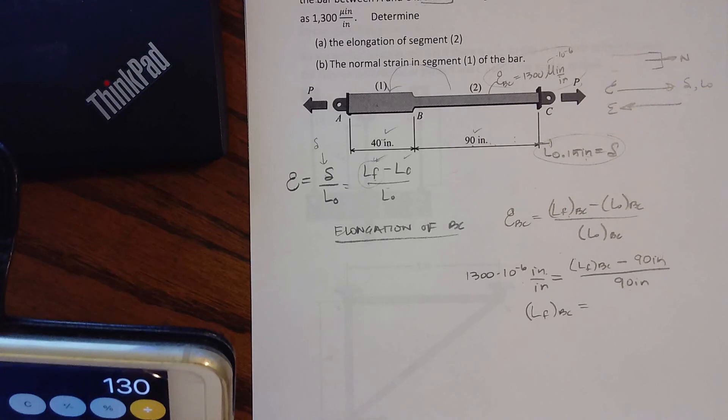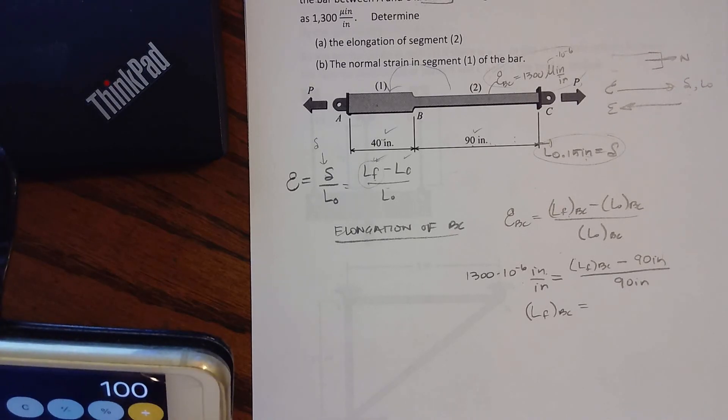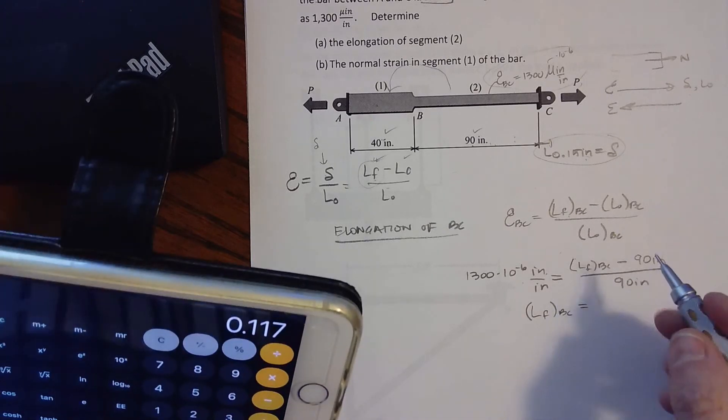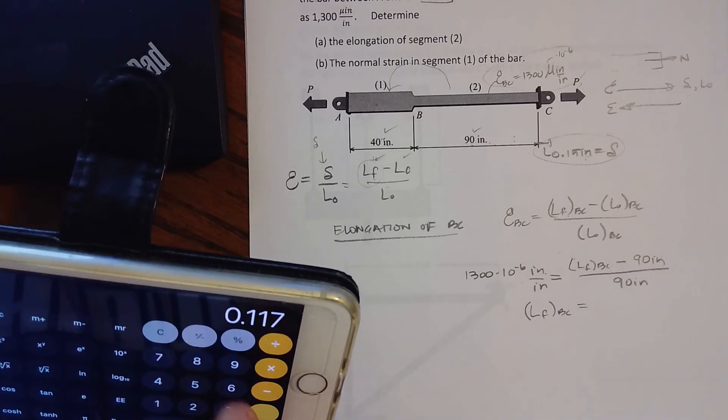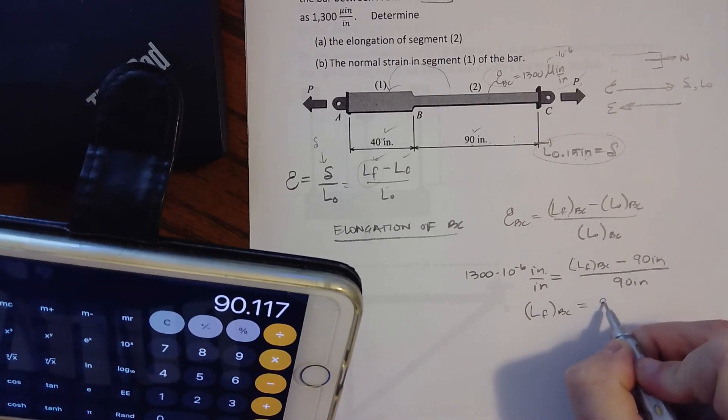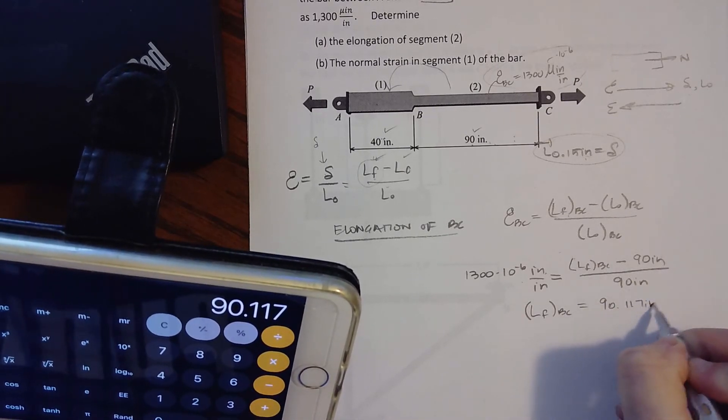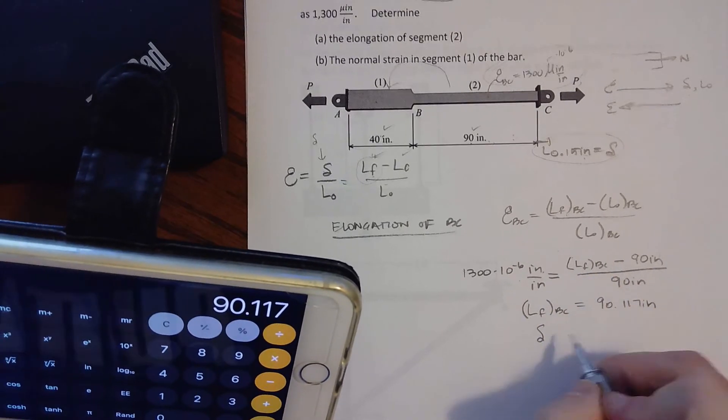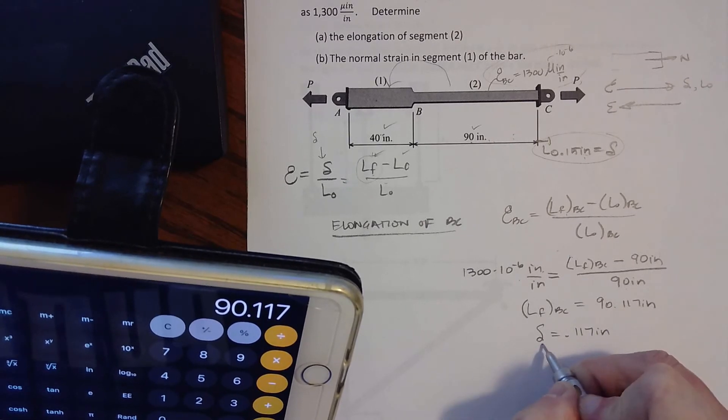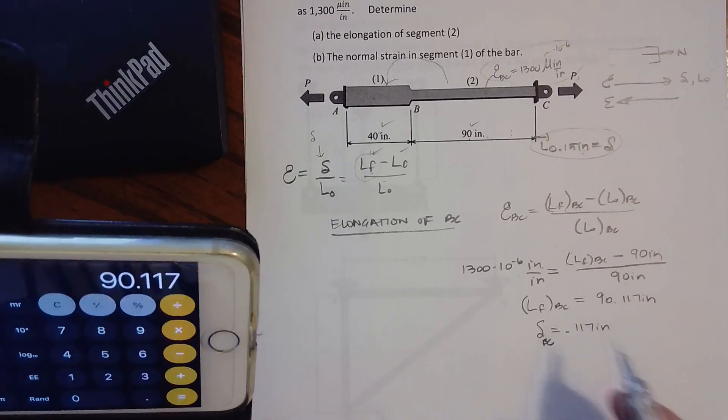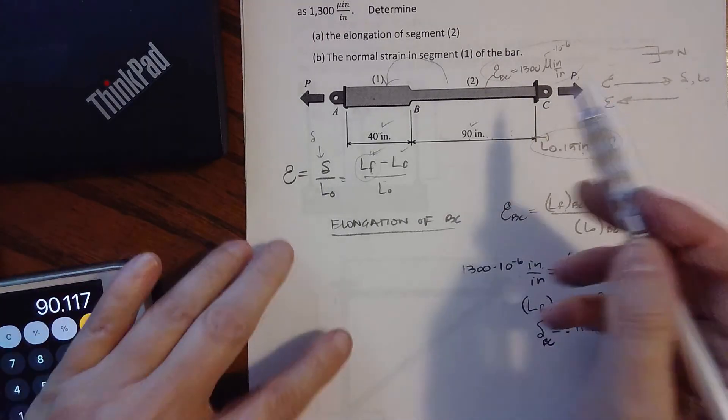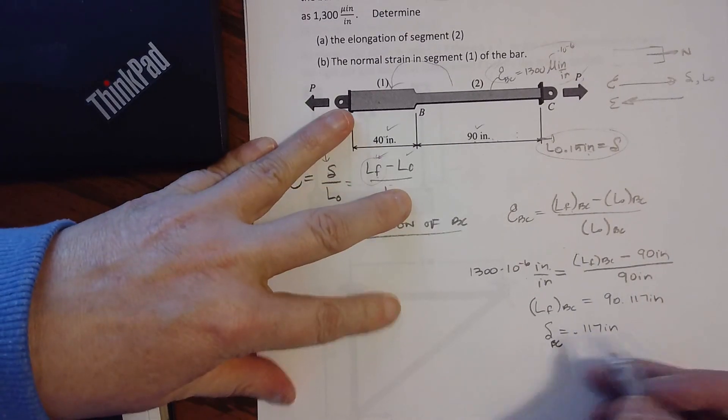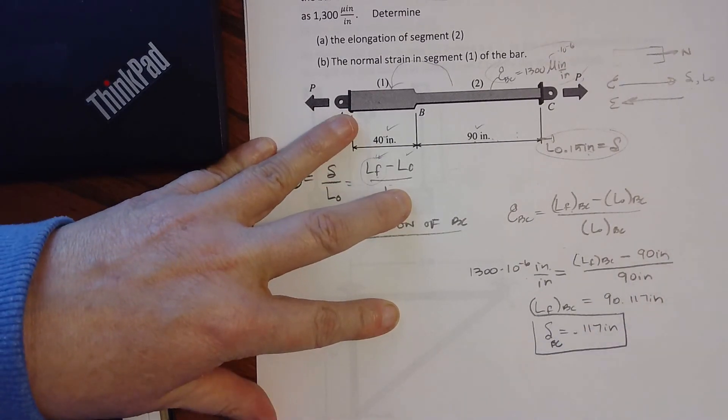Okay, 1300 divided by 1, 2, 3, 4, 5, 6 equals, that's the easier way to do it, times 90. Okay, so I get, and then plus 90. So its final length is 90.117 inches. Okay, that means its change in length, which is final minus initial, is 0.117 inches, and that's from B to C. So if I want to find the elongation of segment 2, here's our elongation, that's the delta elongation.